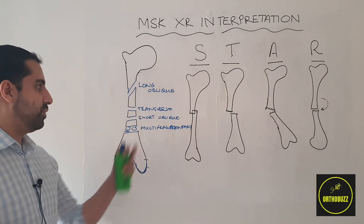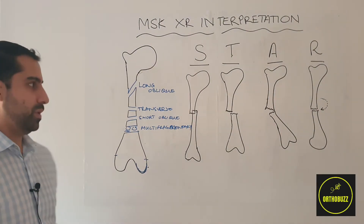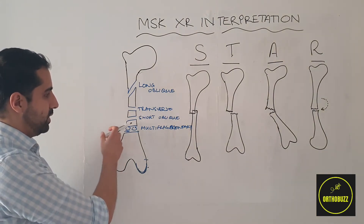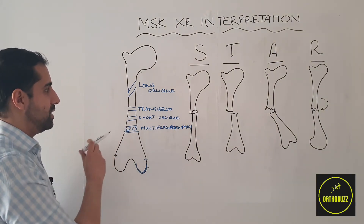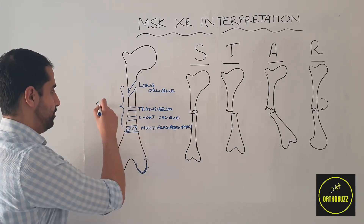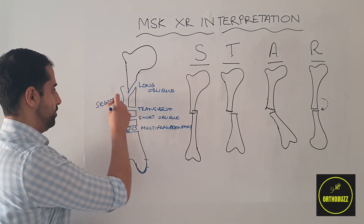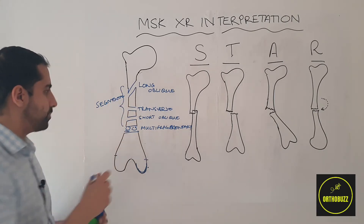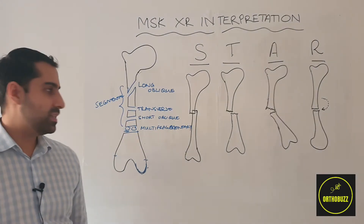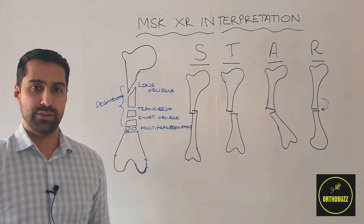Similarly, if we have fractures in the same bone at different areas — for example, a fracture here and a fracture here — this is termed a segmental fracture. So we can get various different fracture patterns, as well as knowing which part of the bone is fractured.